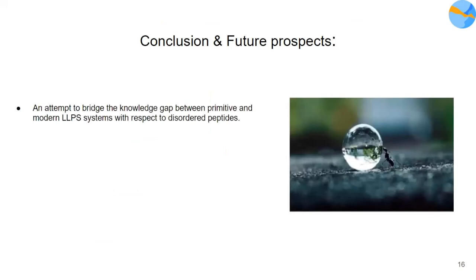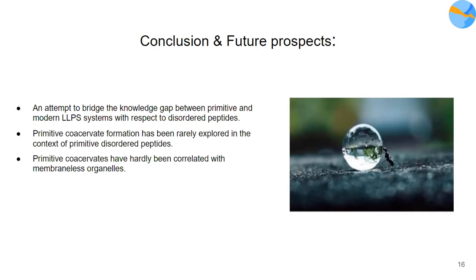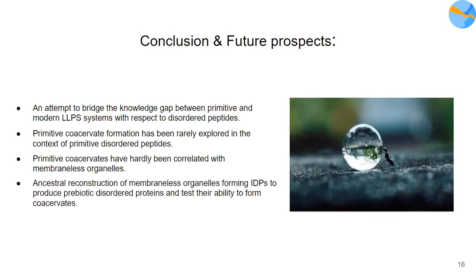To conclude, this review was an attempt to bridge the knowledge gap between primitive and modern LLPS systems with respect to disordered peptides. In the process, we identified a few research gaps: primitive coacervate formation has rarely been explored in the context of primitive disordered peptides, and these primitive coacervates have not been well associated with membraneless organelles in cells. A possible way to address these gaps is to ancestrally reconstruct IDPs that form membraneless organelles with prebiotic disordered proteins, and test the ability of these prebiotic proteins to form coacervates.